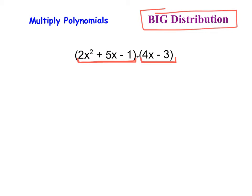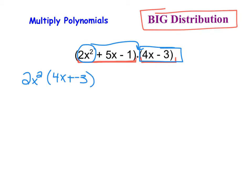What we're going to do first is take the first term, 2x squared, and multiply it by both items inside of the second set of parentheses. So I write 2x squared — that's my first term — and multiply it by 4x plus negative 3. I have 2 times 4 which is 8, x squared times x which is x to the 3rd. And then 2x squared times negative 3 gives me plus 2 times negative 3 is negative 6x squared. So I take the first term and multiply it by both terms in the second set of parentheses.